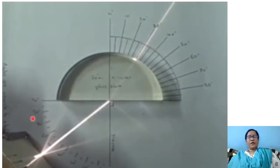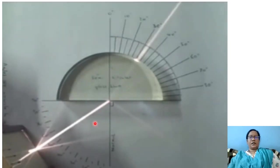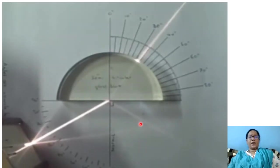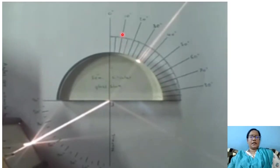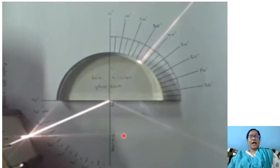What did you understand in this activity? When light travels from a rarer medium to a denser medium, the refracted ray bends towards the normal. So the angle of refraction is less than the angle of incidence.